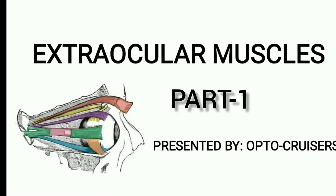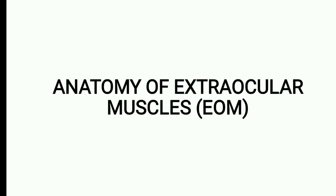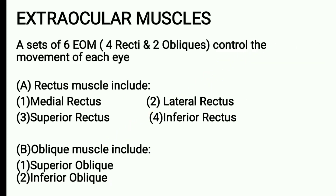Hello guys, welcome back to our YouTube channel. Today I am going to tell you about extraocular muscles. There are a set of six extraocular muscles — four rectus and two obliques — which control the movement of each eye. The rectus muscles are superior rectus, inferior rectus, medial rectus, and lateral rectus. The oblique muscles include the superior oblique and inferior oblique.